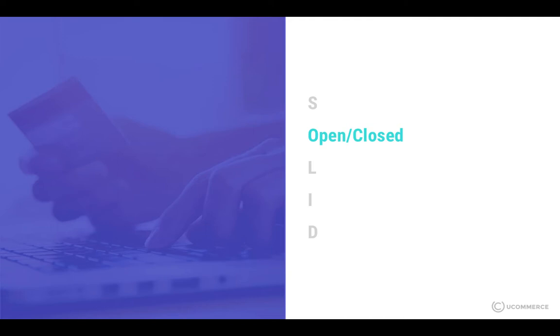The open/close principle says that your code should be open to extension and closed to modification. The idea is that you should be able to override code and behavior without actually changing the code. That's really key for a platform company like uCommerce, because it enables us to ship a platform where you can actually change the behavior without having access to the code. This is usually done through injection, and we'll take a look at exactly how that works in a moment.